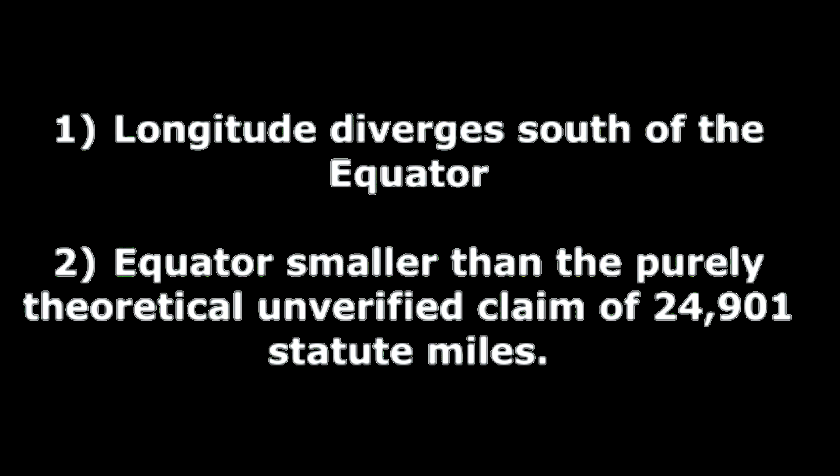The cruise of Her Majesty's Ship Challenger. Circumnavigation of the South. The Challenger expedition of 1872 to 1876 was a scientific voyage around the world of considerable significance in the scientific exploration of the South Pacific. Over 100 specialists from all fields were assembled to produce a rich body of data. Actual sailing distances prove: 1. Longitude diverges south of the equator. 2. Equator smaller than the purely theoretical unverified claim of 24,901 nautical miles.